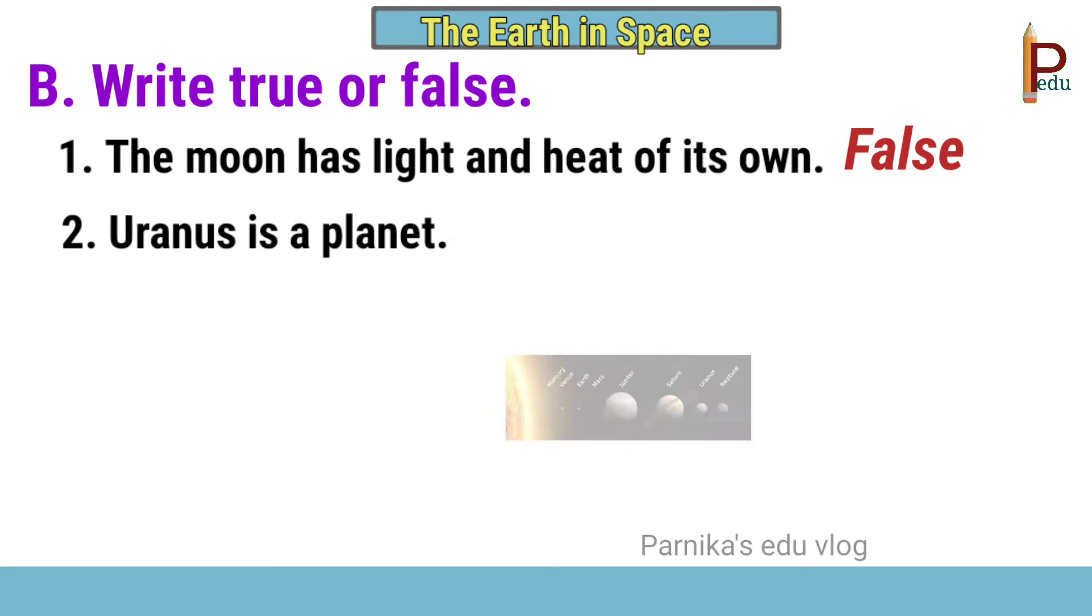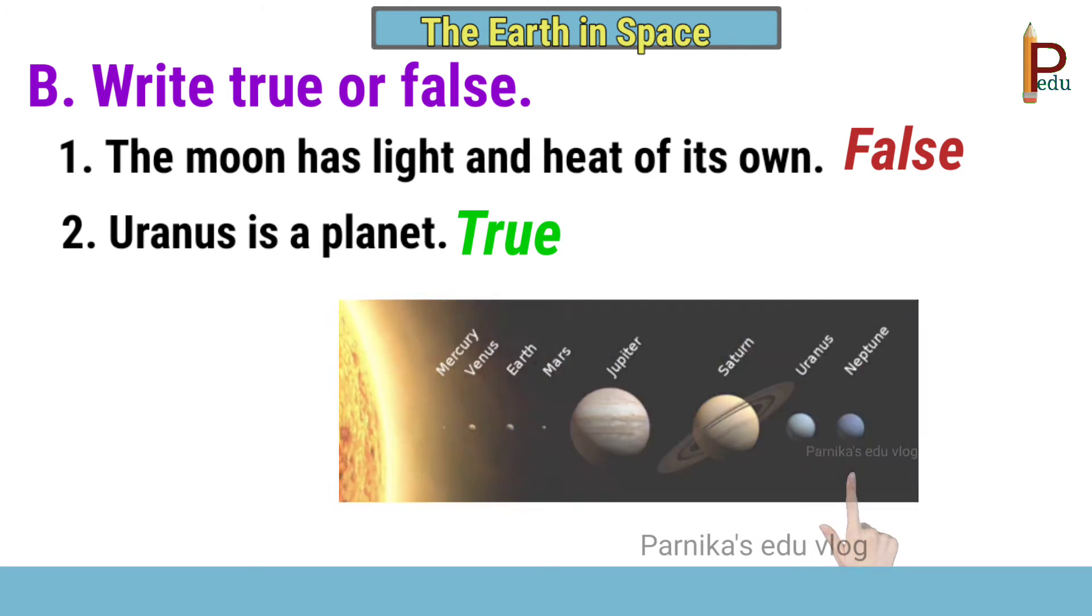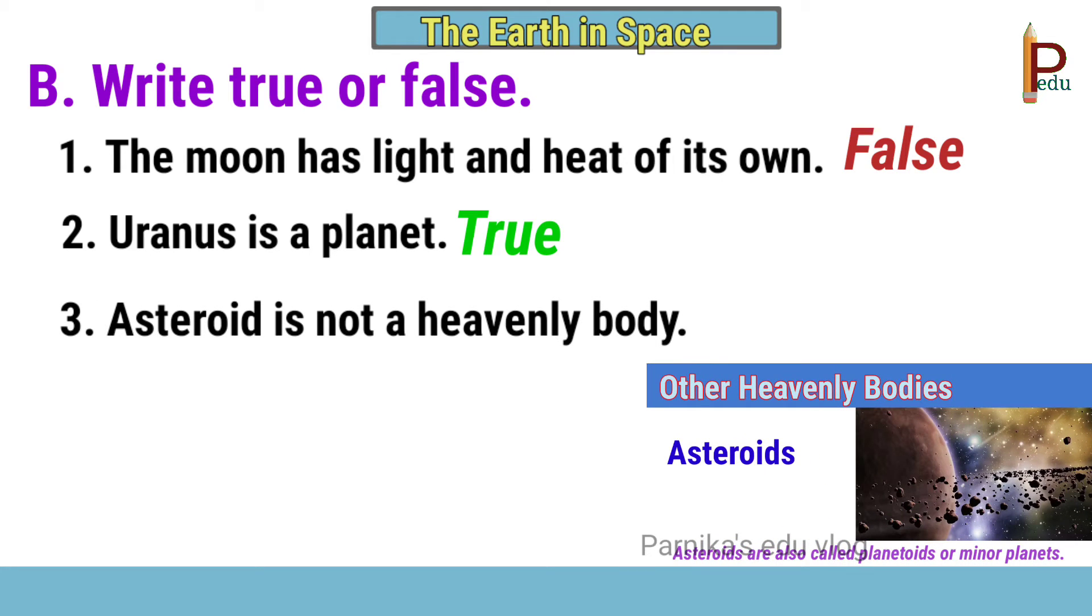Second one, Uranus is a planet. Yes, it is true. Third one, asteroid is not a heavenly body.